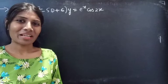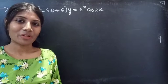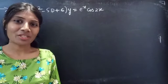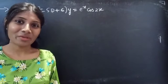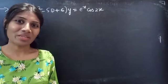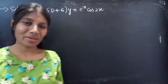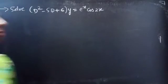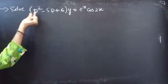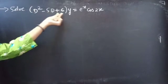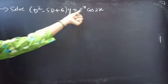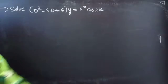Hello everyone, this is Jay Kalkina here. In this video, we are going to solve a differential equation from higher order linear differential equations. Problem: Solve (D² - 5D + 6)y = 3e^x cos2x.